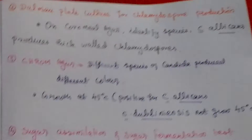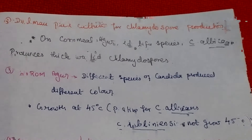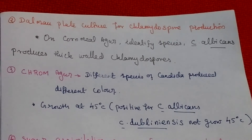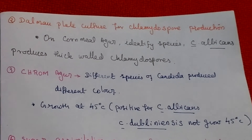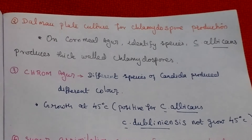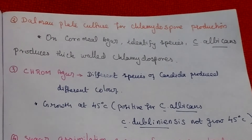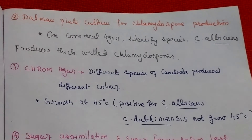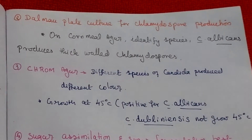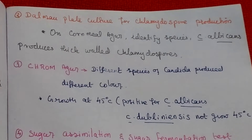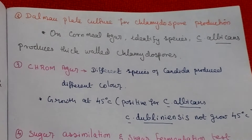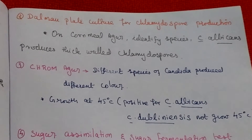The Dalmo plate culture method is used for chlamydospore production. On cornmeal agar, this method identifies Candida albicans, which produces thick-walled chlamydospores.